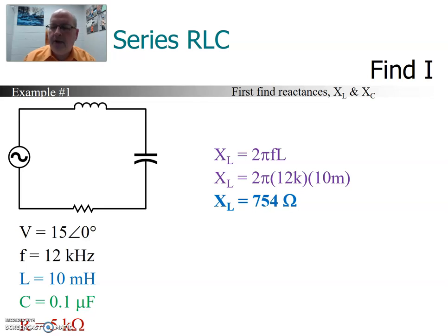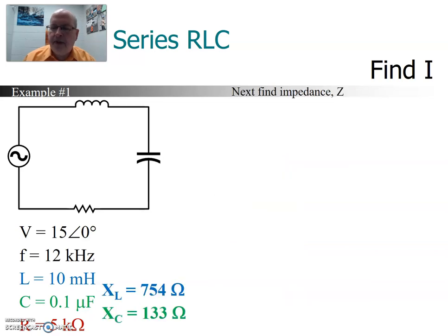We do the same thing with the capacitor. The formula for capacitive reactance is 1 over 2 pi fc. We'll put our numbers in. 1 over 2 pi, 12 k times 0.1 micro. And we're going to get a value of x of c of 133 ohms. We take these two values and put them aside.